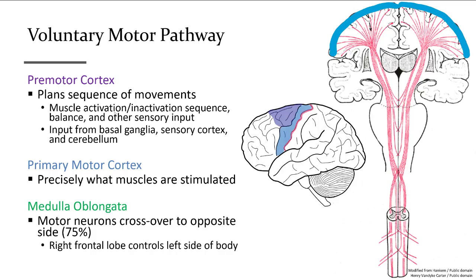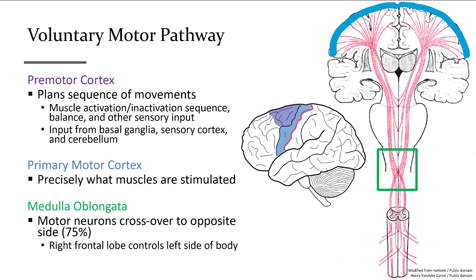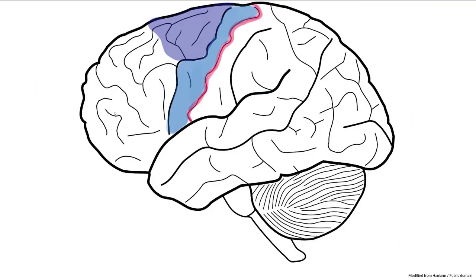At the medulla oblongata, the majority of neurons from the primary motor cortex will cross over to the opposite side, then continue to descend the spinal cord and exit via the anterior horn on the opposite side. The area dedicated to forming speech, adjacent to the mouth and throat area of the primary motor cortex, is known as Broca's area. It is found on only one side of the brain, most often the left hemisphere, and connects muscles of the mouth, airway, tongue, soft palate, and respiratory muscles to produce speech.